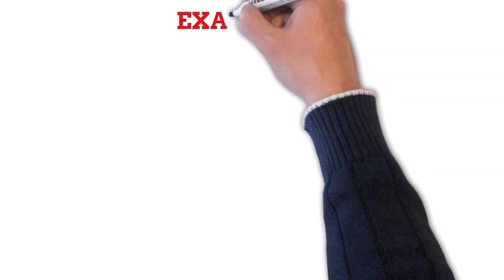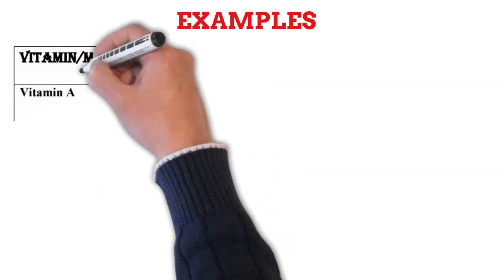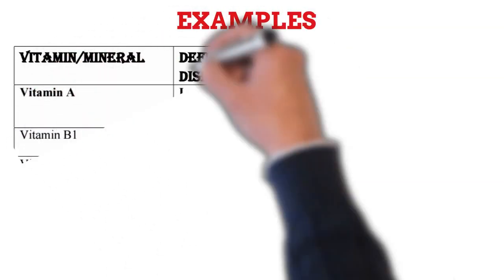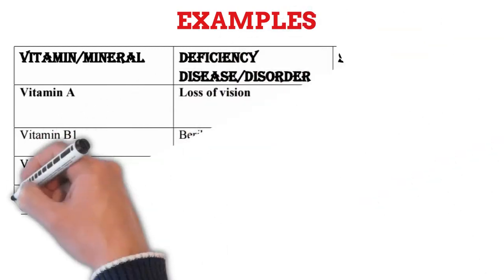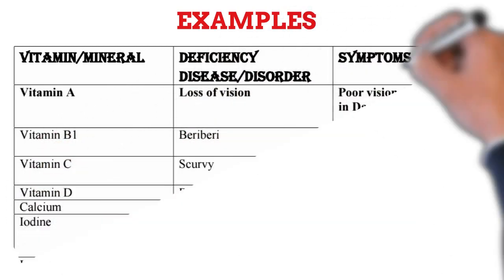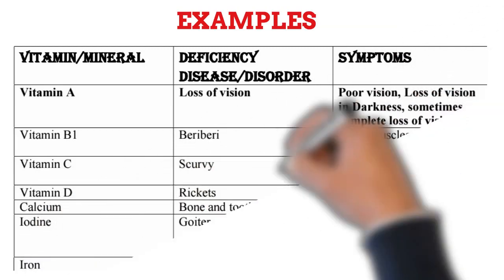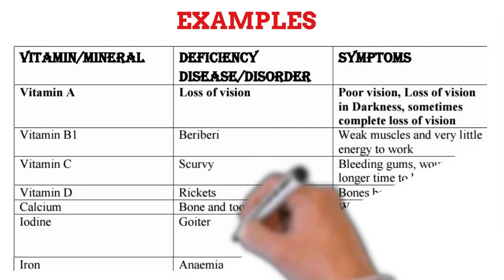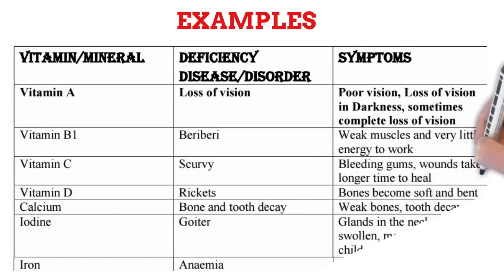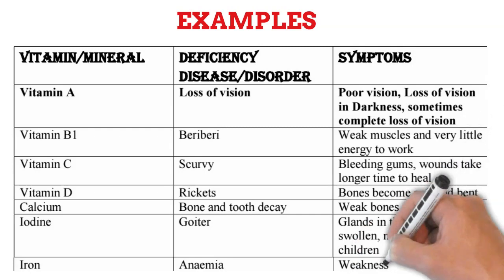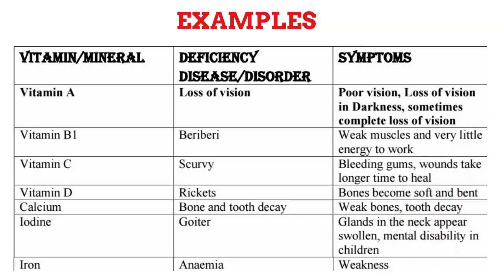Deficiency of different vitamins and minerals may also result in certain diseases or disorders. In deficiency of vitamin A, we may suffer from loss of vision. In deficiency of vitamin B1, we may suffer from beriberi. In deficiency of vitamin C, we may suffer from scurvy. In deficiency of vitamin D, we may suffer from rickets. In deficiency of calcium, our bones and teeth start to decay. In deficiency of iodine, we may suffer from goiter. In deficiency of iron, we may suffer from anemia.